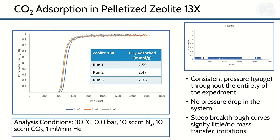Looking at our pelletized sample first, we get really nice breakthrough curves. They are very sharp, which implies there are little to no mass transfer limitations in our material — if we did have mass transfer limitations, we would expect a much more gradual breakthrough curve. Additionally, we can see consistent CO2 adsorption across multiple runs, and the pressure measured in our column is pretty consistent right around zero gauge pressure.